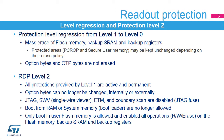It is possible to modify option bytes in level 1 and remove the protection by changing the protection level to level 0. This protection level regression will cause the flash memory and the backup SRAM to be mass erased. Flash areas protected by PC-ROP or configured as secure user memory can be erased or left unchanged, depending on their erase policy configuration.